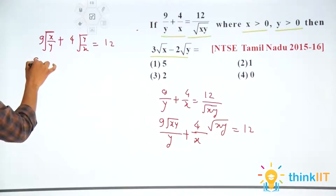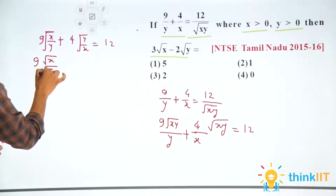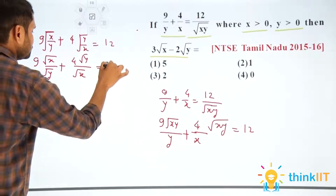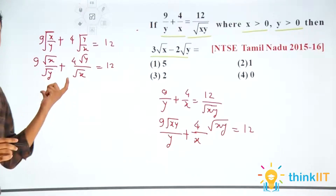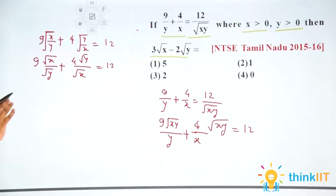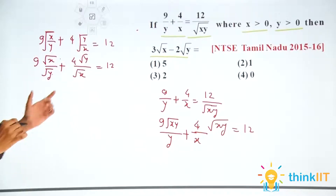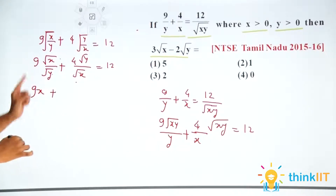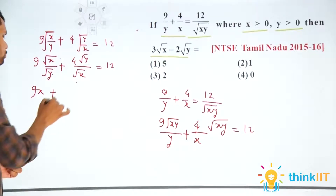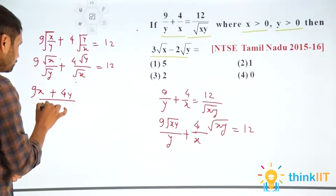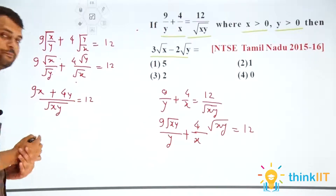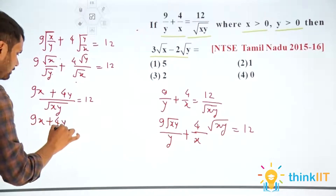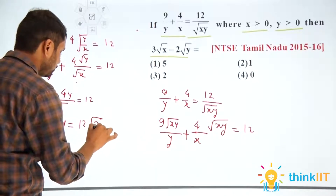Now I can also take LCM of root x and root y and convert to a common denominator. The LCM of root x and root y, when multiplied out, gives: 9 times root x into root x is 9x, plus 4 times root y into root y is 4y, all upon root xy, is equal to 12. This equation can also be written as 9x plus 4y is equal to 12 times root of xy.